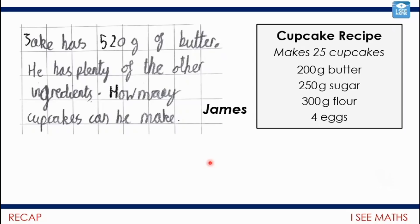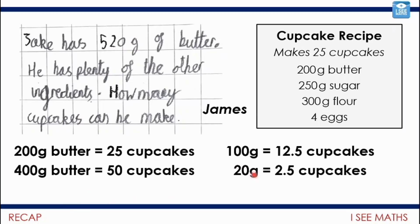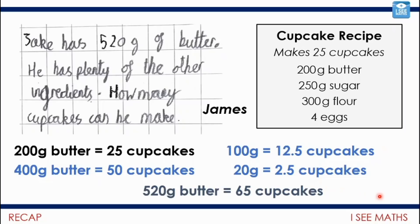Let me show you the different steps I broke this down into. 200 grams of butter is enough for 25 cupcakes, so 400 grams of butter gives 50 cupcakes. For 520 grams, I need to think about 100 grams and 20 grams separately. 100 grams gives 12.5 cupcakes. For 20 grams: 100 divided by 5 gets us to 20, so that's 2.5 cupcakes. Adding up 400 + 100 + 20 grams = 520 grams, giving 50 + 12.5 + 2.5 = 65 cupcakes in total.